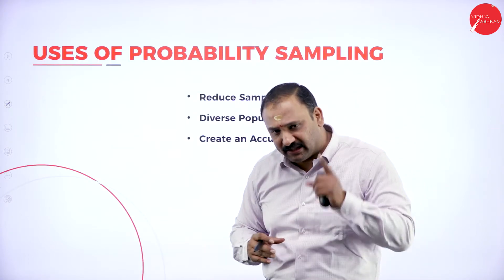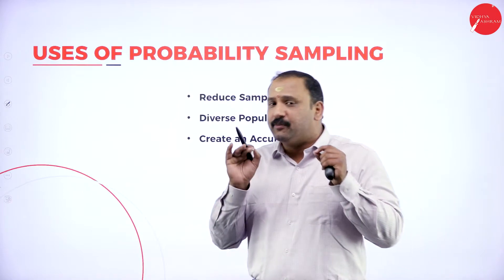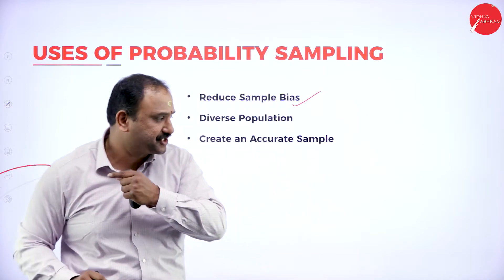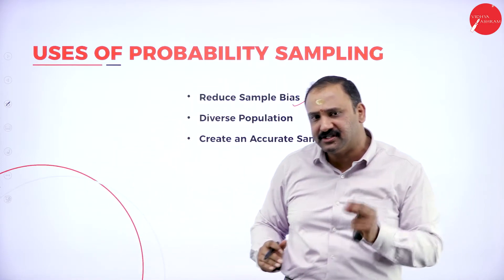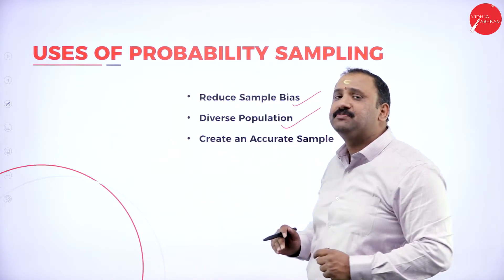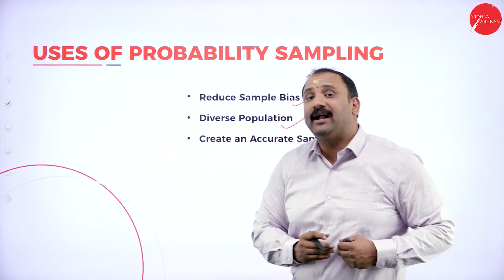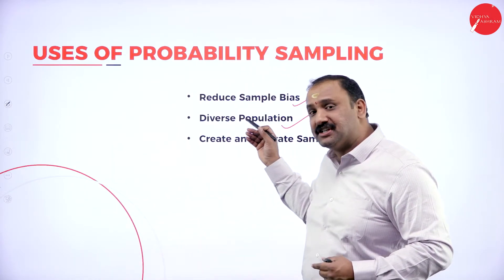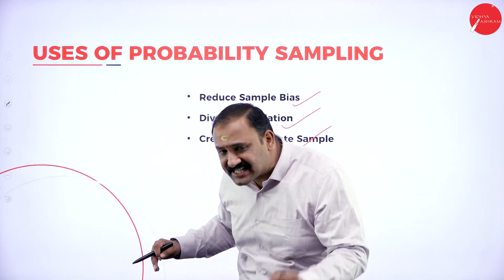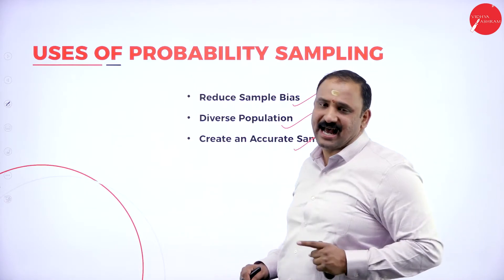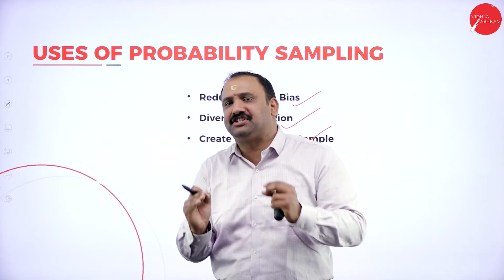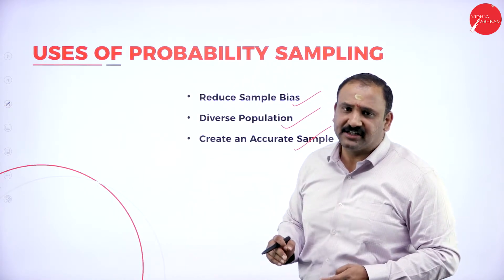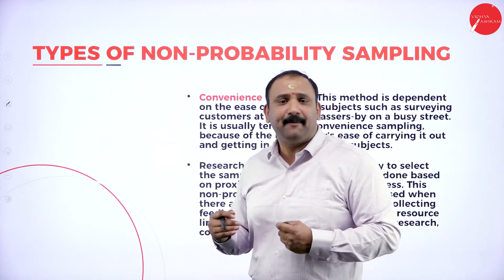The uses of probability sampling include: first, it reduces sample bias — the researcher should be completely neutral while understanding results and their implications. Second, it covers a diverse population, since sampling methods allow access to a very diverse, large population. Third, it creates an accurate sample — a well-built sample with correctly identified characteristics will give better results in the long run.